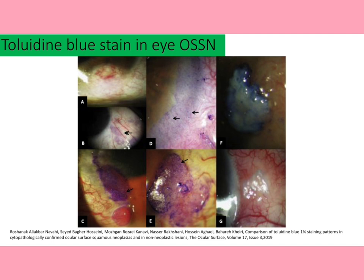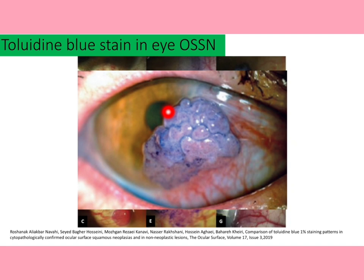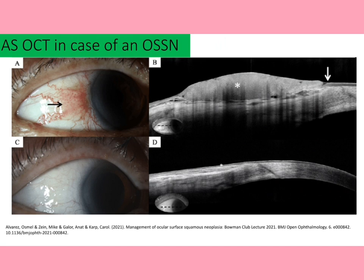Another dye used in ophthalmology is toluidine blue — an acidophilic metachromic high-density dye. OSSN lesions have less intracellular adhesion, so toluidine blue stains these cells easily. In clinical practice, 0.05% toluidine blue is used to minimize side effects. A staining-positive result indicates abnormal cell growth or carcinomatous changes.